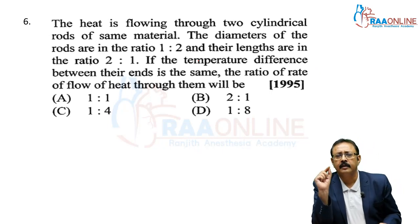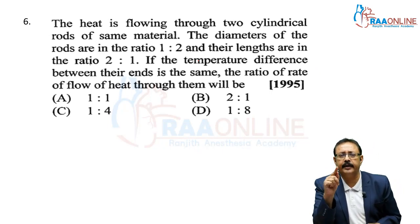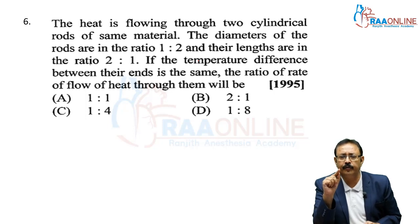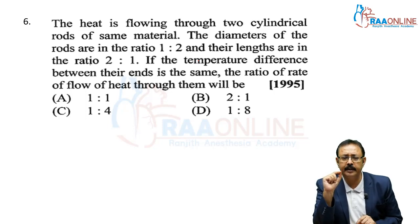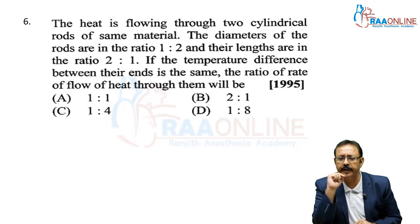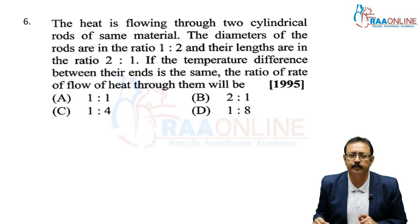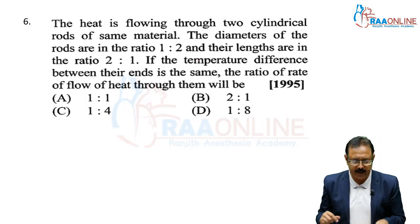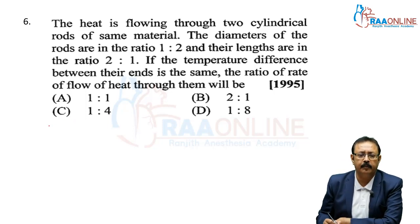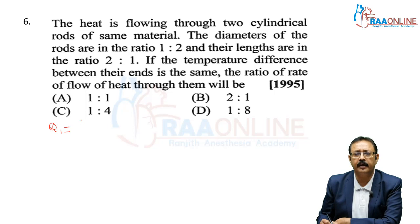Next problem from AIPMT 1995: heat is flowing through two cylindrical rods of the same material. The diameters are in the ratio 1:2 and their lengths are in the ratio 2:1. The temperature difference between their ends is the same. What is the ratio of rate of flow of heat through them? The formula is Q = KAΔθ/D per unit time.